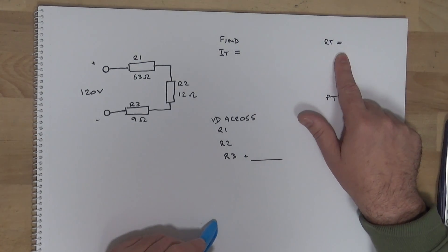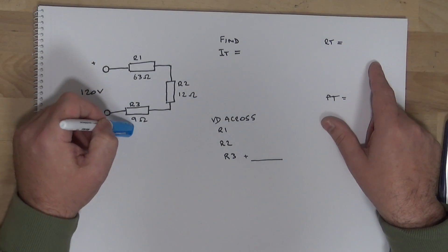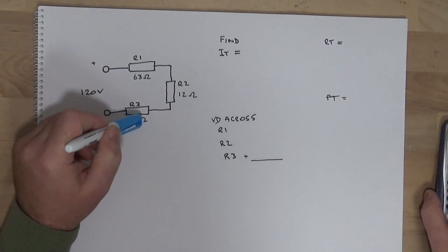All right, so the resistance total in a series circuit is the sum of all resistors. So it's as simple as this.